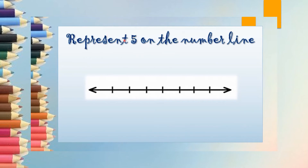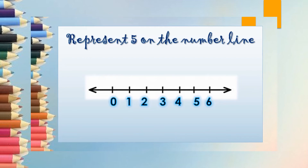Suppose I have to represent 5 on the number line. Firstly, I will draw a number line with arrows on both sides and ticks on equal intervals, then write down the numbers under it. When all the numbers are written and I have to represent the number 5, then 5 is already written here. What you will do is just put a circle around the number 5 — this will be the representation of number 5 on the number line. Easy, isn't it?